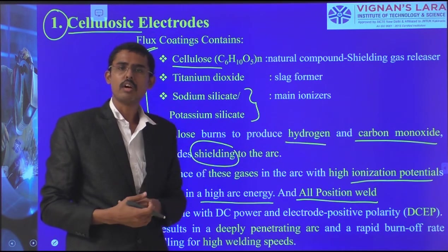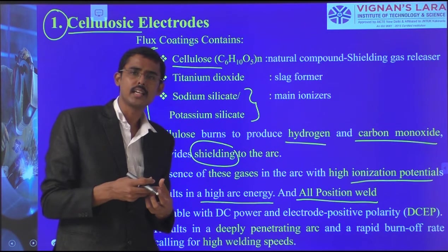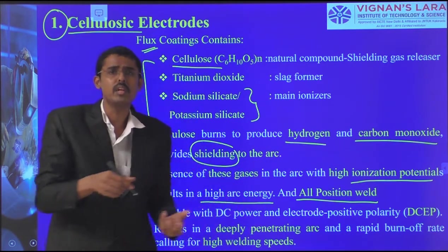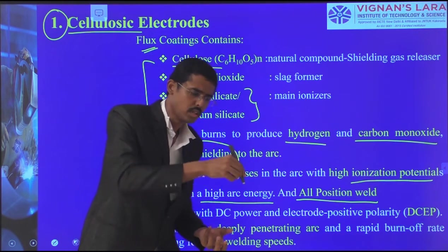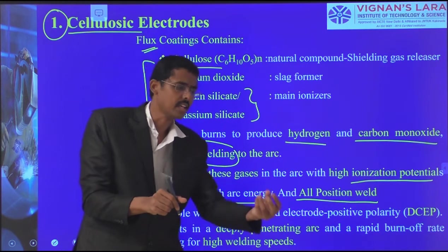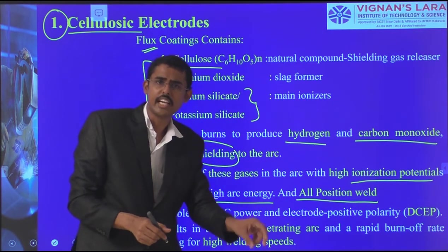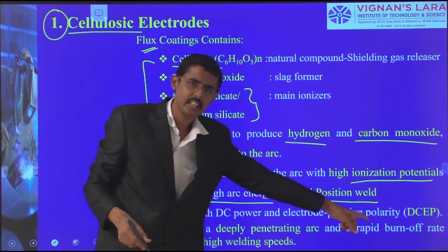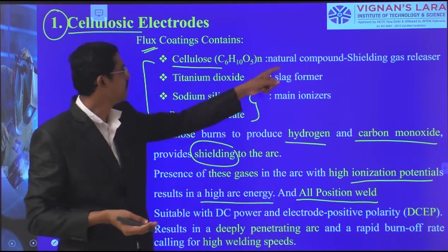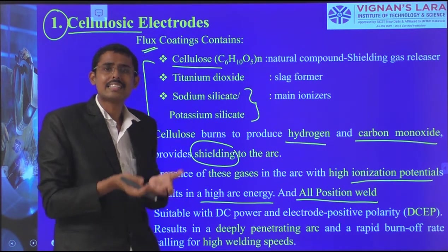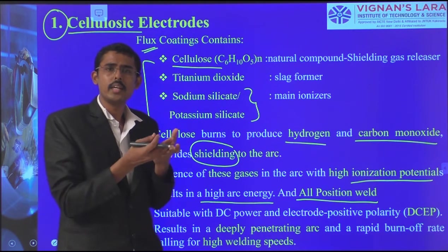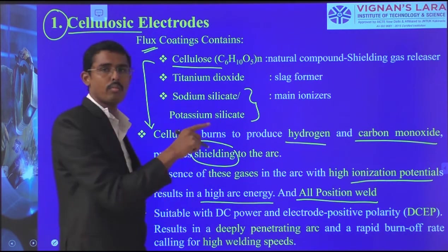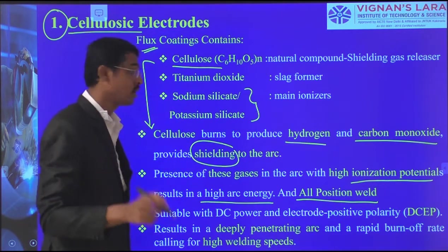Due to good formation of shielding gas, more heat and melting are generated. We can move faster — the welding can be done faster because once the area is heated and melted, we can move to the next location. The burn-off rate is high and welding speed is also high. The cellulose shielding gas improves arc stability, good shielding, welding speed, and deeper penetration. These are advantages of the cellulose electrode, but one problem is that it produces hydrogen.